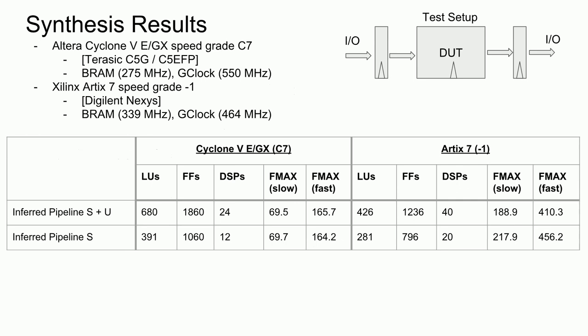As usual, I am testing the implementation on an Altera Cyclone 5E C7 speed device and an Arctic 7-1 speed device, both of which are readily available in development kits. As with previous videos, the test implementation is sandwiched between two I.O. registers to obtain an estimate for the maximum clock frequency. The same clock is used for those registers as well as the multiplier pipeline. We can clearly see an advantage in resource usage when moving from the signed plus unsigned case to the signed case, with the extra bit tacked on.